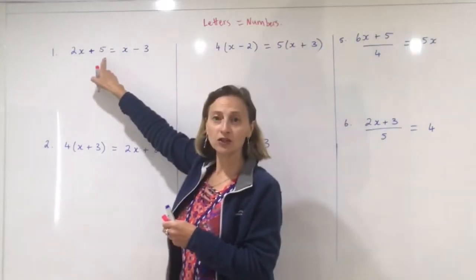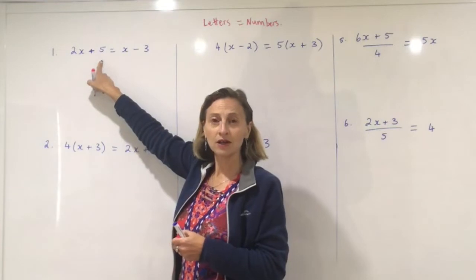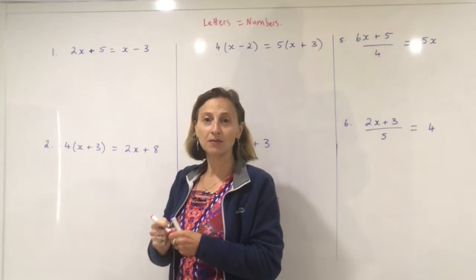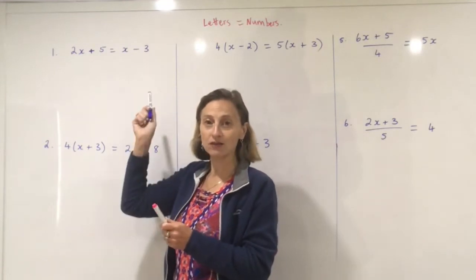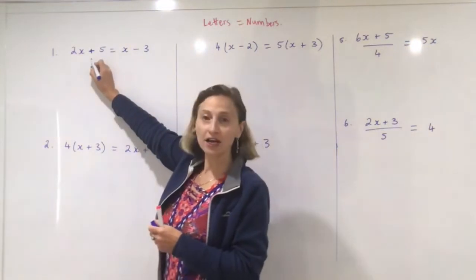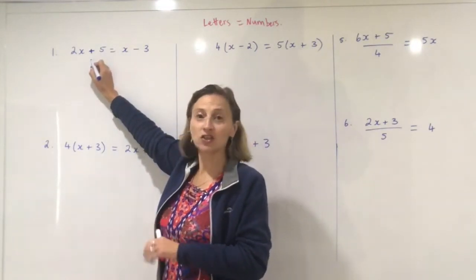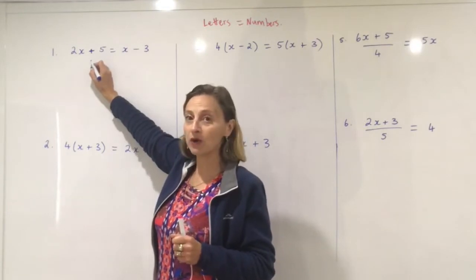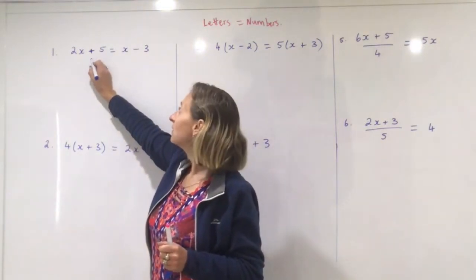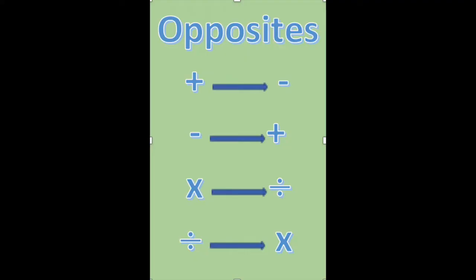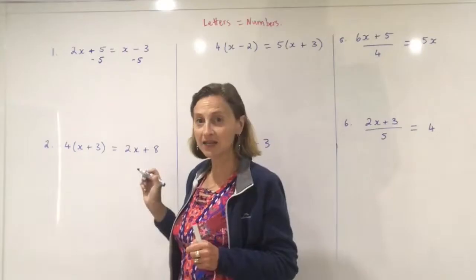Our first question has no fractions and no brackets, so we can move straight on to rule number three — moving the numbers and letters so that letters are on the left and numbers are on the right. The first thing I like to do is to get rid of the numbers. So I'm going to move this plus five to the other side. Remember, I need to do the opposite, so I'm going to minus five.